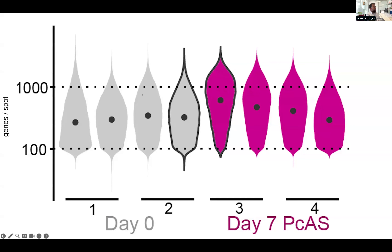This is some quality control data from five of the original SlideSeq v2 arrays. Each violin plot is a different array — four from an uninfected scenario and four in magenta from an infected scenario. On the y-axis, you can see the number of unique genes we could detect per 10 micron spot — in the region of a few hundred to maybe a thousand on a particularly good area of the array. So with that data as it is, without any other supplementation, what can you do with it?